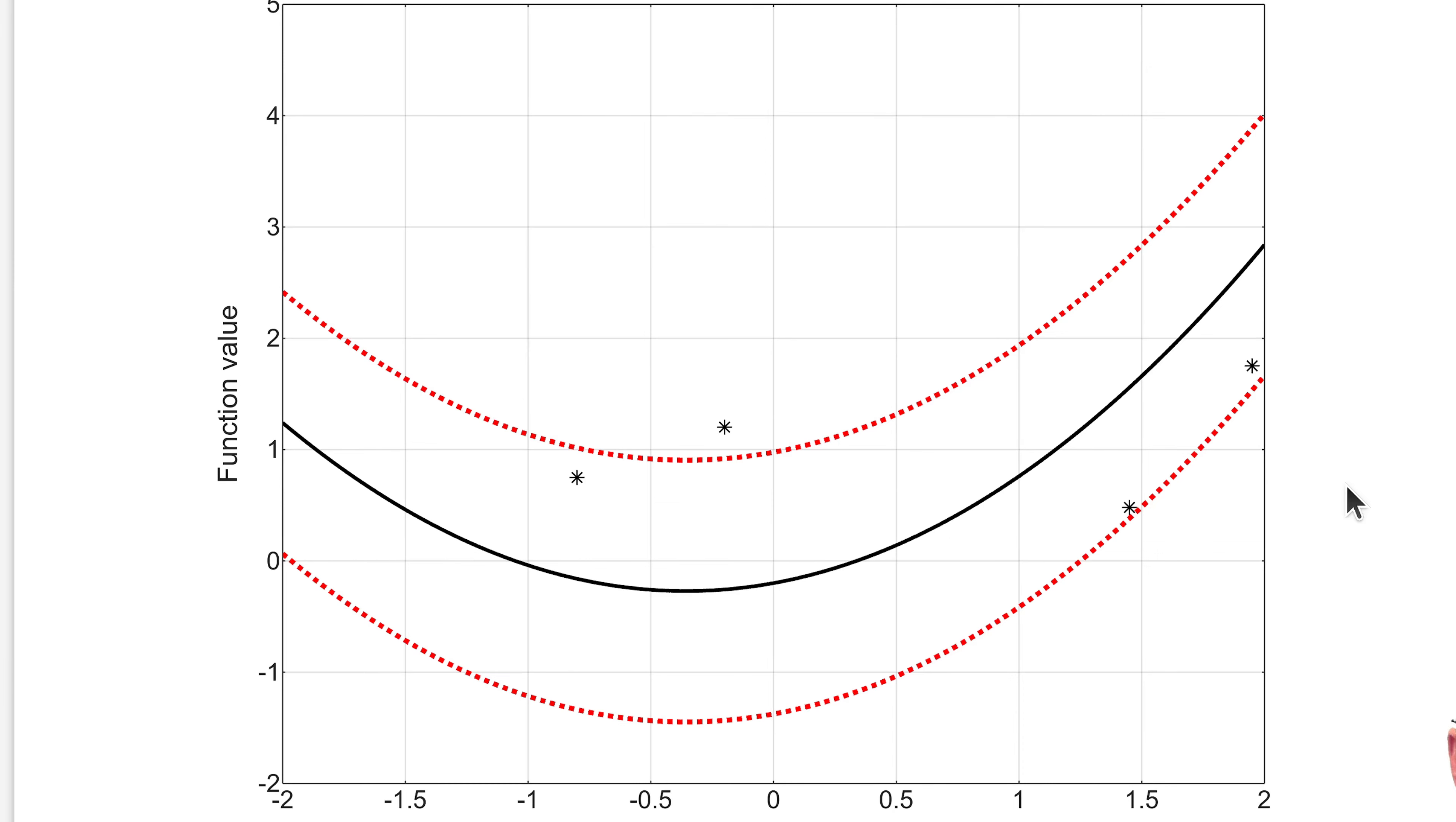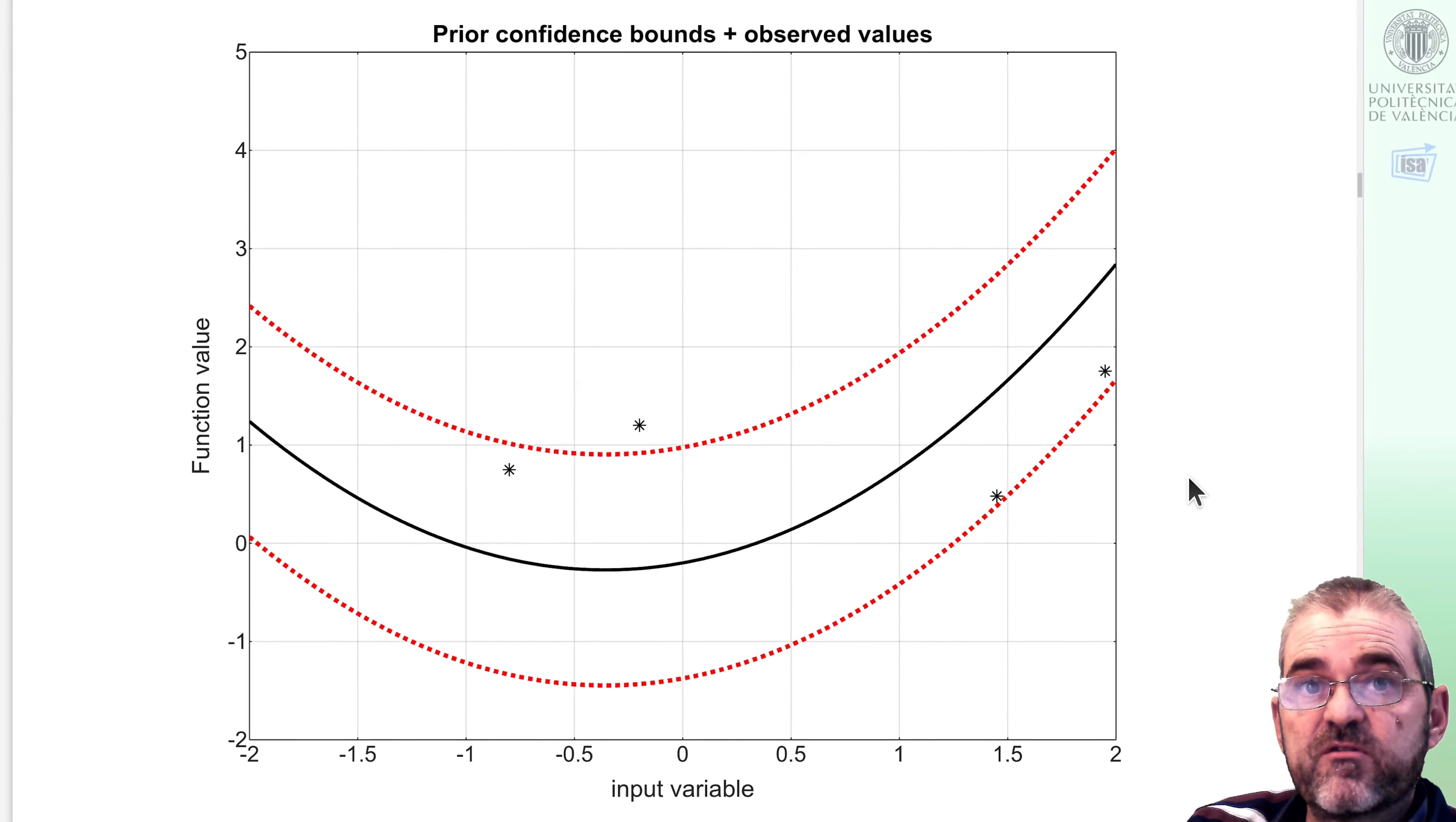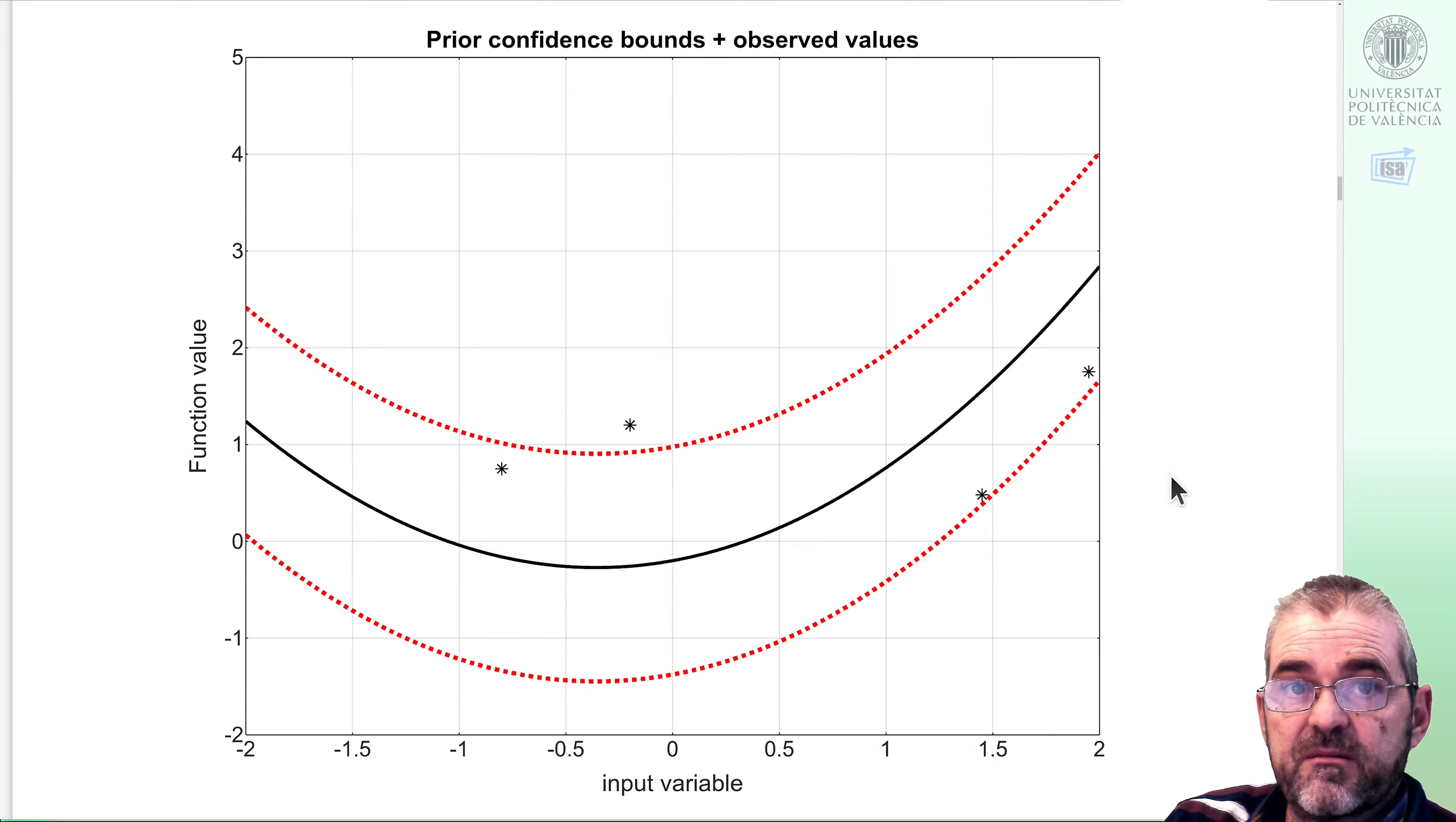That is called hyperparameter optimizations. Once I have a handful of points, I may rebuild my prior with some maximum likelihood argumentations. We are not going to do that. This is just a first approach to Bayesian optimization, so we are not modifying the prior. But keep that into account for future refinements.